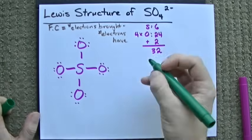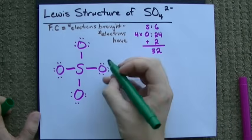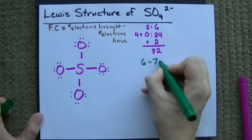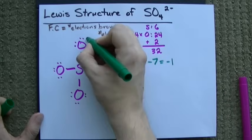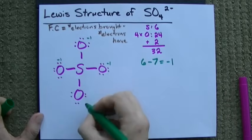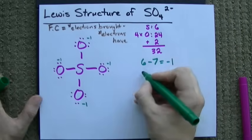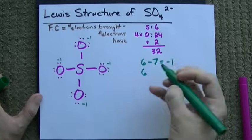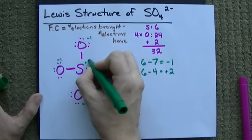Each oxygen brought 6 electrons, and each oxygen has 1, 2, 3, 4, 5, 6, 7 electrons. So each oxygen has a formal charge of minus 1. They're all the same right now. Now, the sulfur brought 6 electrons, but it only has 1, 2, 3, 4 electrons around it, which gives it a formal charge of plus 2.